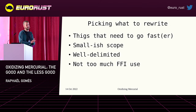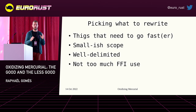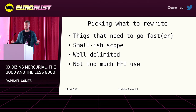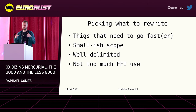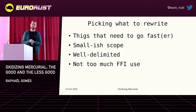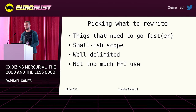When thinking about introducing Rust inside Mercurial, what we did was try to find exactly what to rewrite and why. One of the main reasons was performance and because nobody wanted to write C anymore. We need to pick something that needs to go fast or faster. It needs to have a small enough scope so that it can fit in the mind of a single person. It needs to be well delimited — the inputs and outputs need to be known in advance — and it doesn't need to do too much FFI use. FFI is foreign function interface, the interface between two languages, namely Python and Rust, and it's very expensive and pretty hard to do correctly.